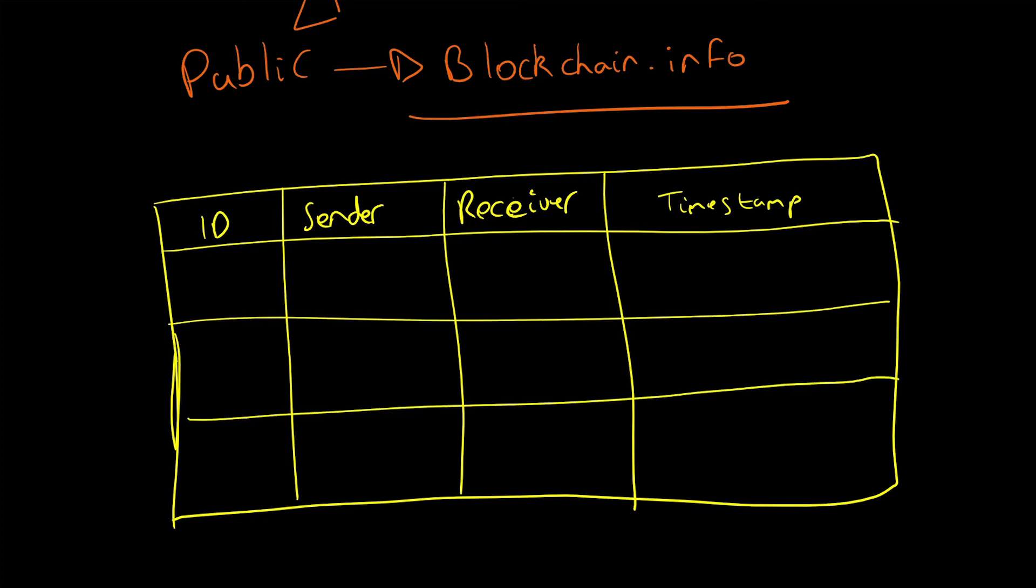We would say the ledger at the moment has three transactions. So this is early days: 001, 002, 003. And let's just use normal names. So Bob sent something to Tom, and Tom sent something to me. And my name is Frahan, if you did not know that. And Frahan sent something to Bob.